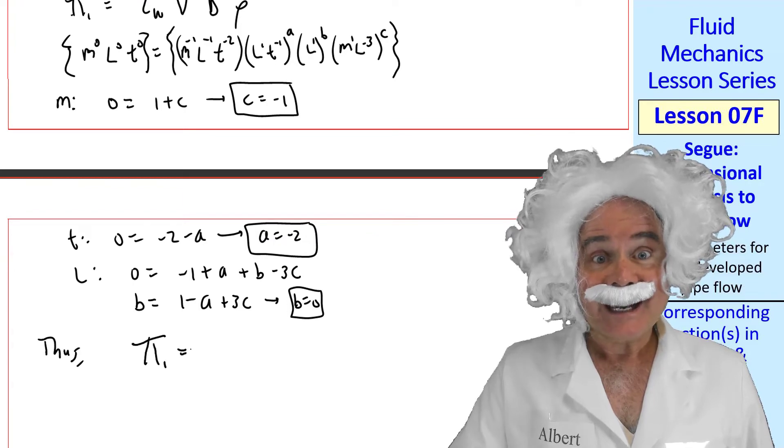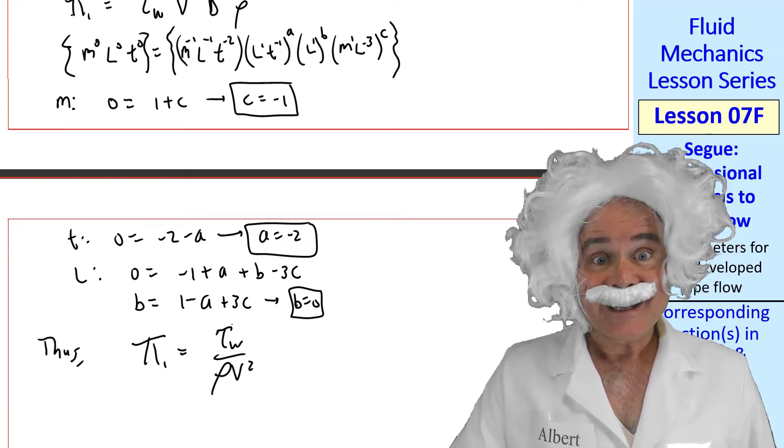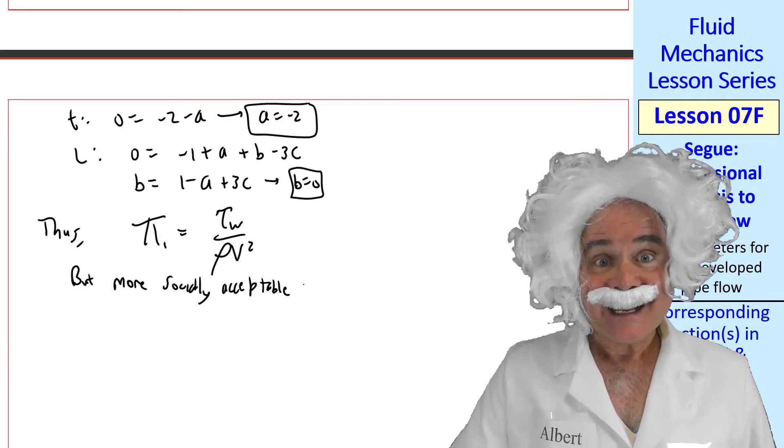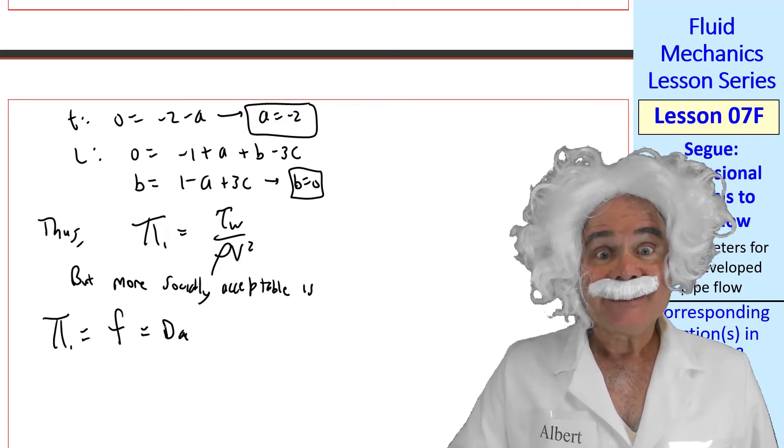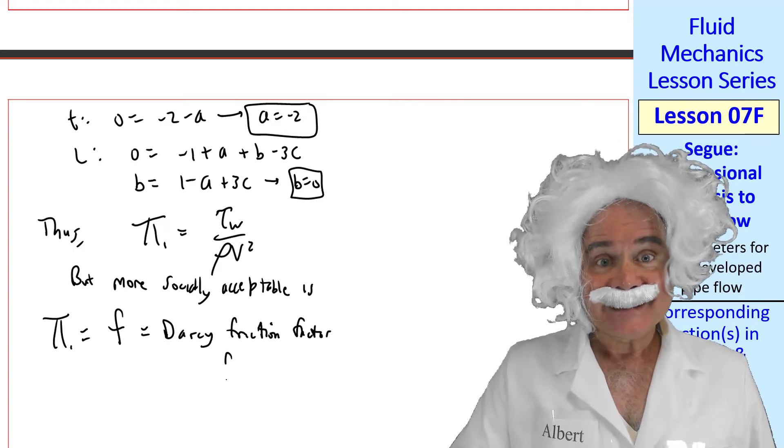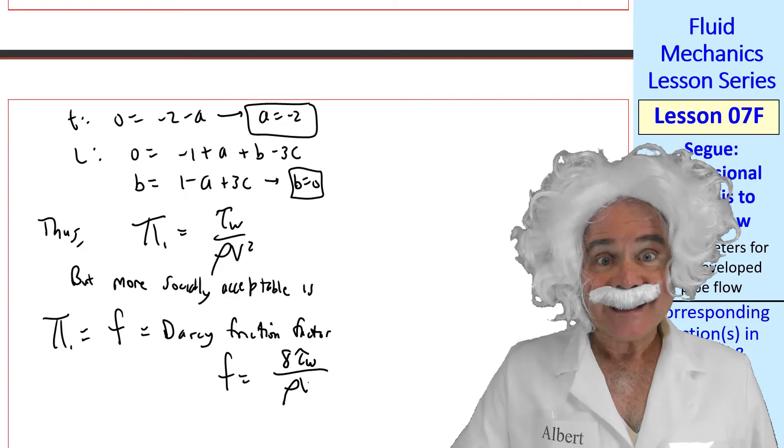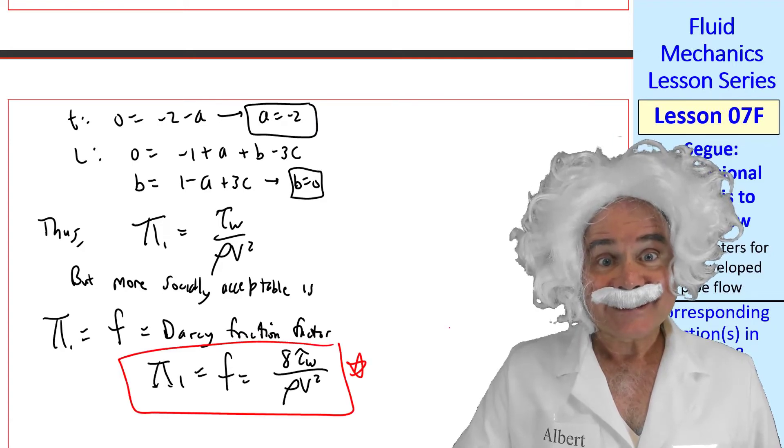So, our pi one is tau w over rho v squared. But what you call a more socially acceptable pi is found in the table. I found f equal Darcy friction factor is the same as our pi, but with a constant 8. We define pi one as 8 tau w over rho v squared.